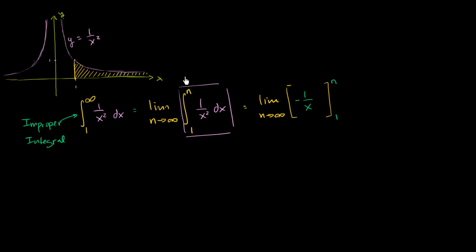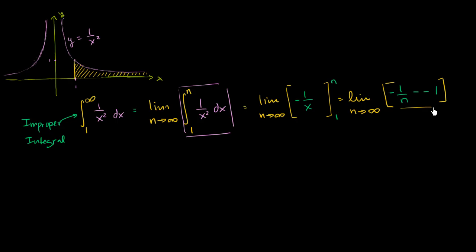So this is going to be equal to the limit as n approaches infinity of: if we evaluate at n, we get negative 1 over n. And from that, we subtract this thing evaluated at 1, which is negative 1 over 1, or negative 1. So we get the limit as n approaches infinity of negative 1 over n minus negative 1, which simplifies to 1 minus 1 over n.